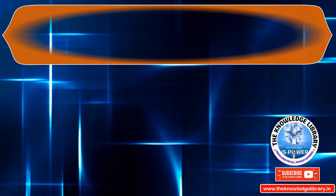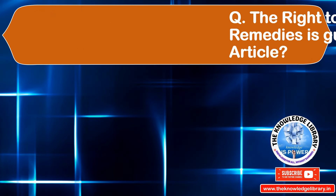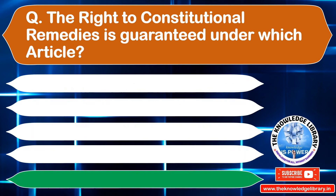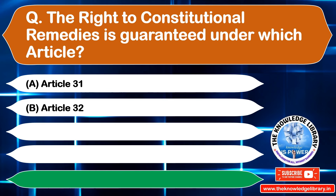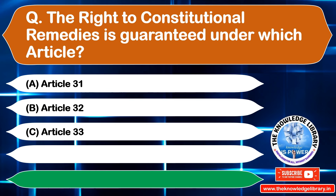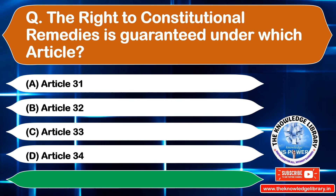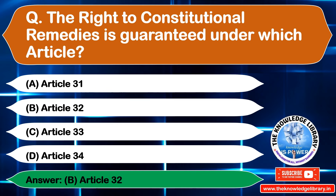The next question is: the right to constitutional remedies is guaranteed under which article? Option A: Article 21, Option B: Article 32, Option C: Article 33, Option D: Article 34. The correct answer is Option B: Article 32.